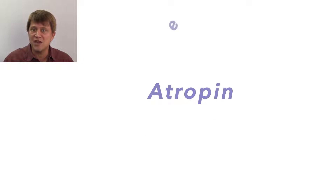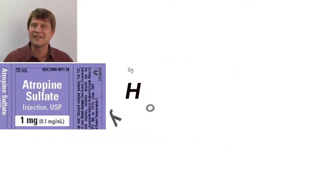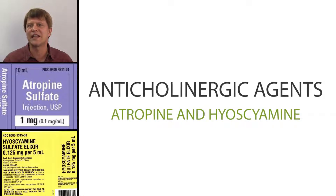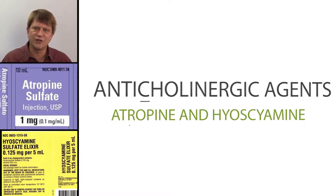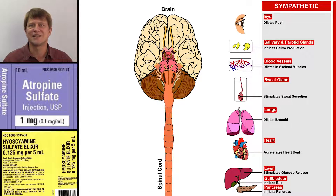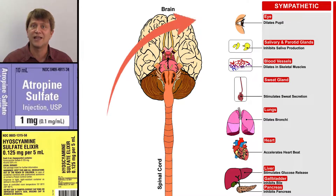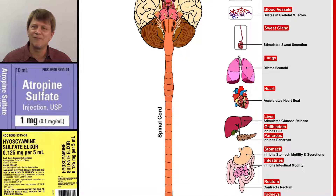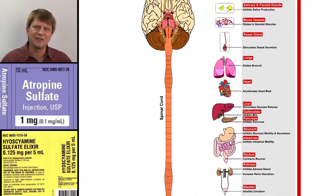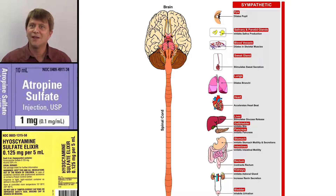To summarize: atropine is an intramuscular or intravenous anticholinergic agent, and hyoscyamine is normally administered sublingually or orally. Being anticholinergic agents, they allow the sympathetic nervous system to dominate, making them useful for treating bradycardia, GI spasm, and topically to dilate the pupils. When remembering the effects and side effects of anticholinergic agents, use your knowledge of sympathetic nervous system actions to predict them. Thanks for joining me.